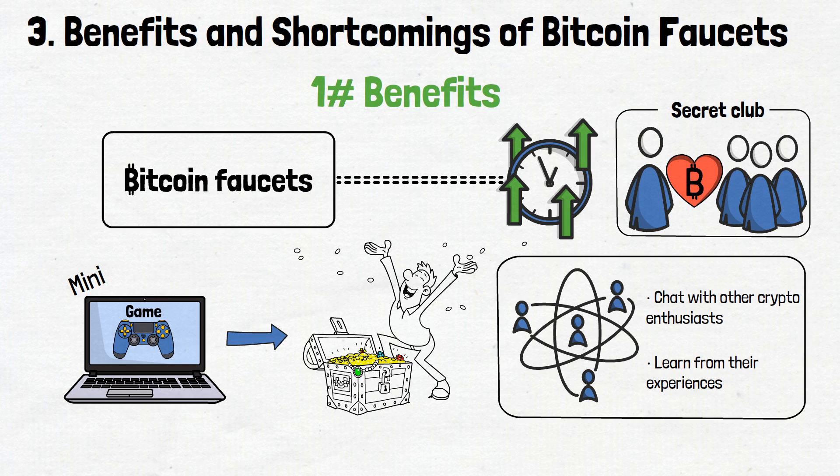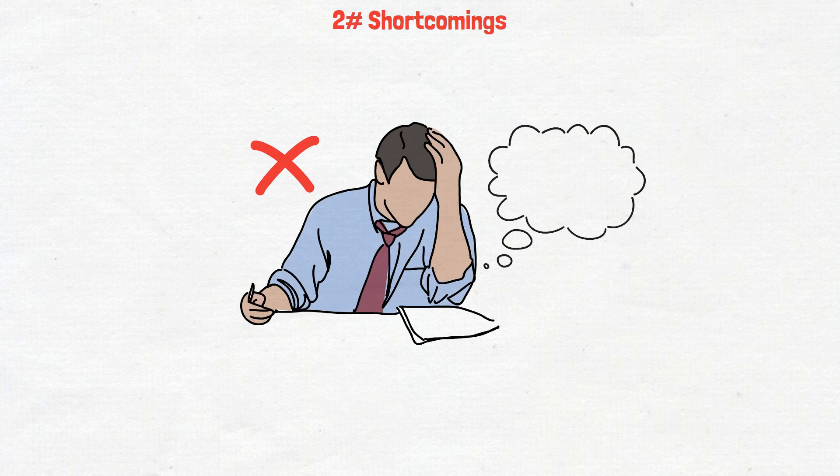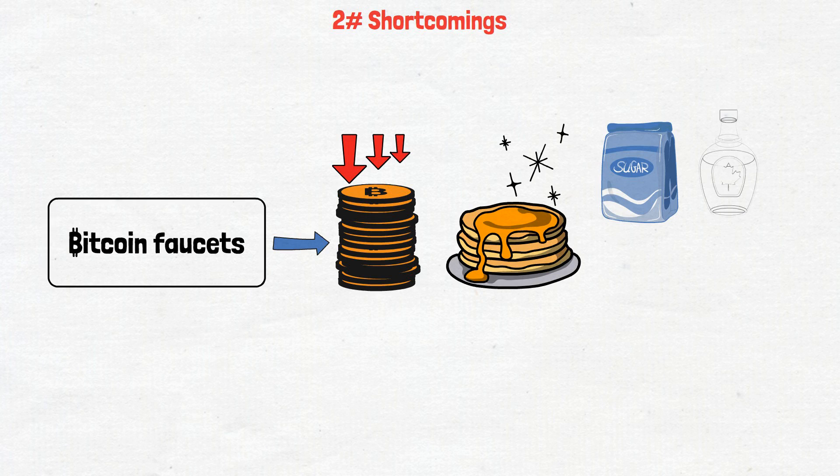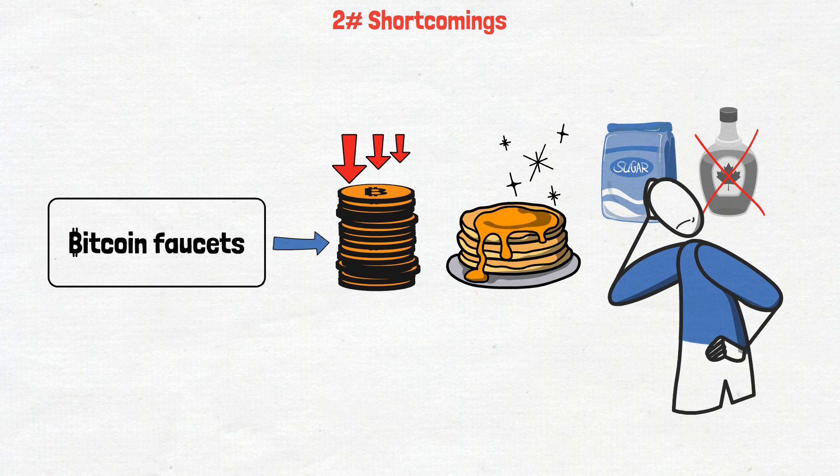But like everything in life, engaging with Bitcoin faucets might bring you some headaches too, especially if you don't do your own research and adjust your expectations accordingly. One big downside is that the amount of Bitcoin you earn from faucets is usually pretty small. It's like getting a sprinkle of powdered sugar on your pancake instead of a mountain of syrup. Still sweet, but not quite enough.